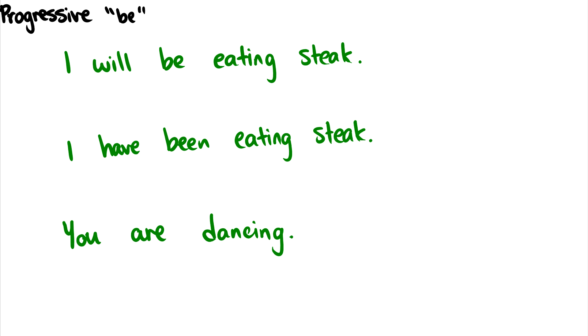Now, let's take a look at the progressive be. I will be eating steak. In this example, we have eat being the main verb yet again. In the second sentence, I have been eating steak. Well, here's something interesting. We have the perfect and we have the progressive. But what do we notice?